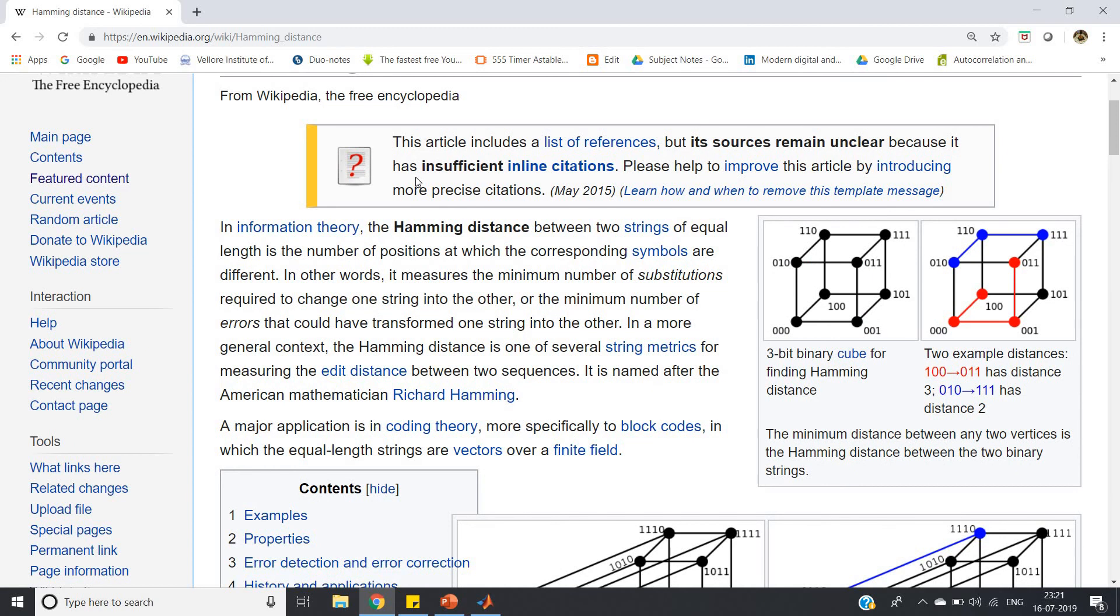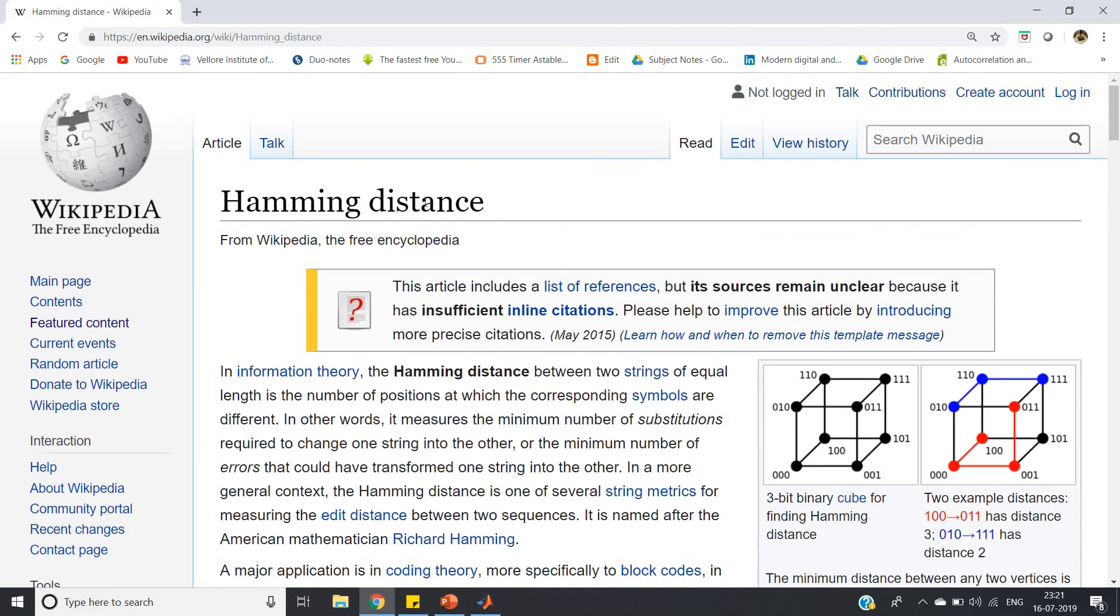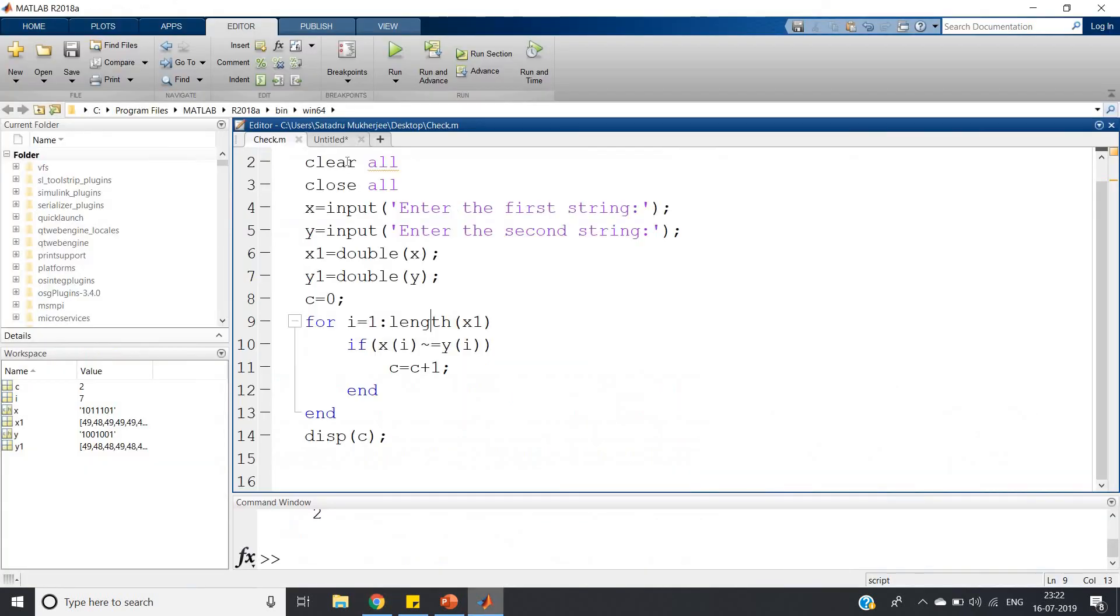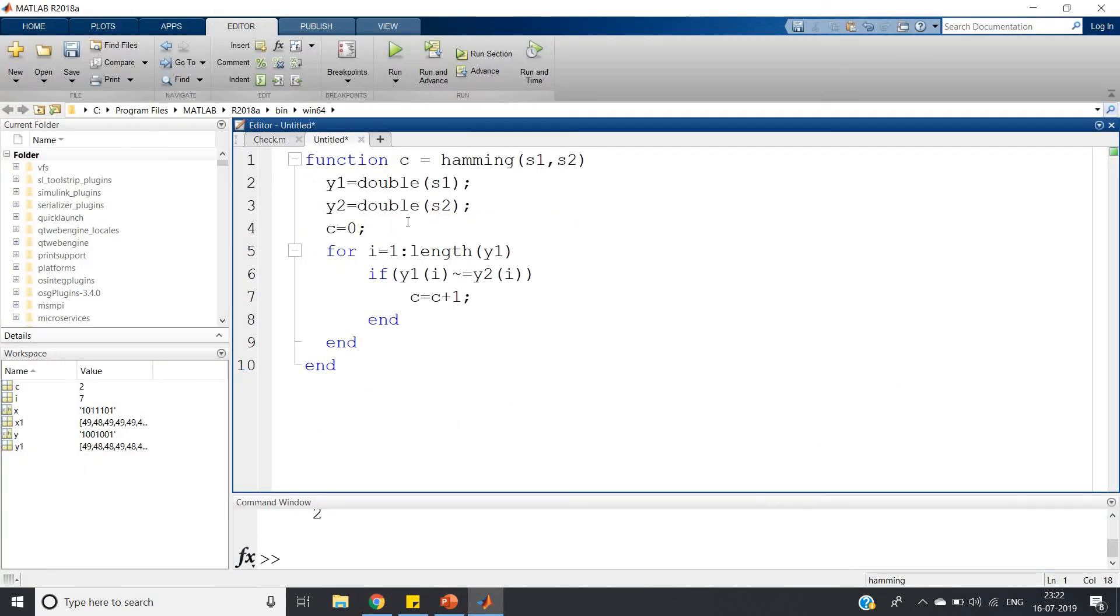These kind of concepts are widely used in data mining also. It may help you in some programming in your communication engineering for calculating errors. I'll post the two source codes - one general code and also the function code - in the description of this video to calculate the Hamming distance between two input strings of same length. If you have any doubt, you can ask in the comment section. Thank you for watching.